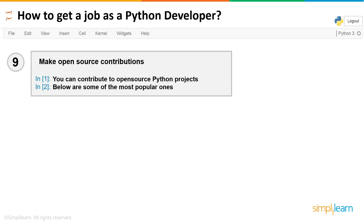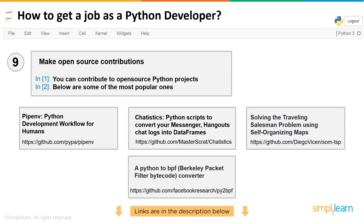Tip number nine: make open source contributions. You have your own GitHub repository — that's great — but now look into others' repositories and see if there's value you can add. This shows not only your skill but also that you're a team player who wants to add value to existing work, a skill highly valued in organizations. Some popular open source projects include pipenv (the Python development workflow for humans), Chatteristics (which converts messenger and Hangout chat logs into data frames), a traveling salesman problem solver using self-organizing maps, and a Python-to-BPF converter. Links are in the description below.